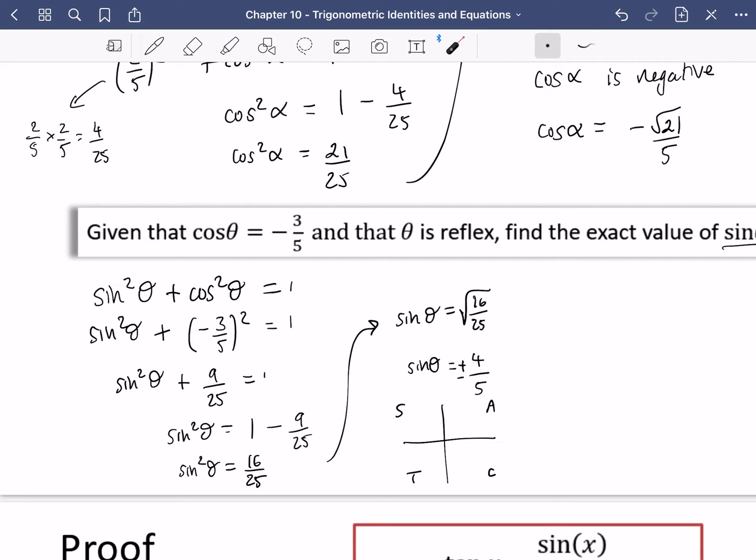This is where you're going to draw your diagram to see what it's going to be. Now it says that it's reflex. Reflex actually could be in the third quadrant, or it could be in the fourth quadrant. But it doesn't really matter which one it's in, because if it's down here, sine is definitely not positive. Sine is positive up here. So sine is going to be negative, which tells me that sine theta is minus four fifths.